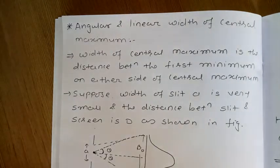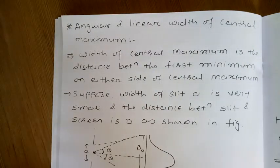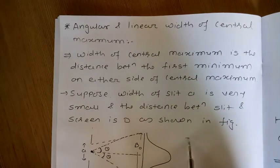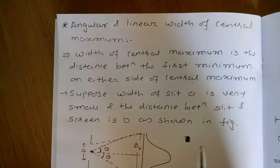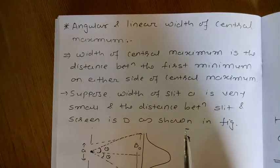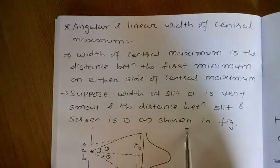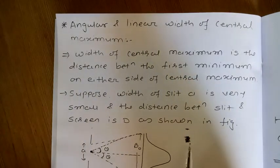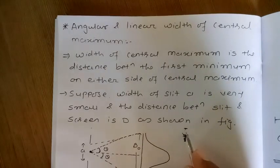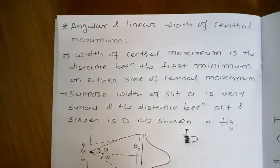The width of the central maximum is the distance between the first minimum on either side of the central maximum. Suppose this is the central maximum, and suppose here there is the first minimum. So the width of central maximum is the distance between the first minimum here and on either side of the central maximum.